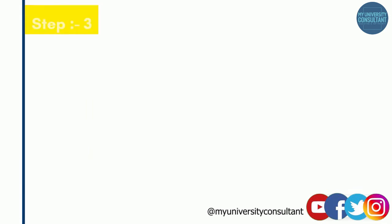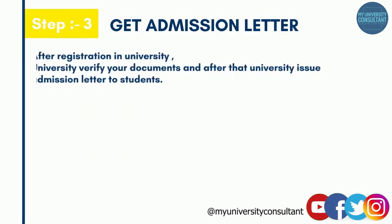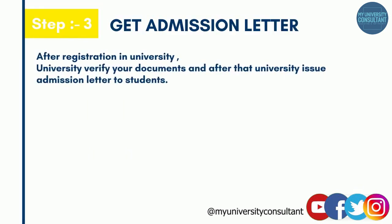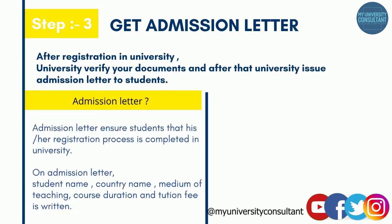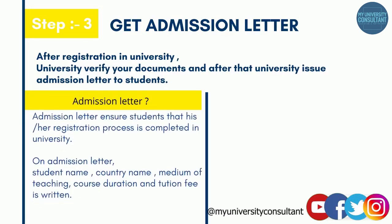In step three, you get the admission letter. After registration, the university verifies your documents and then issues an admission letter to the student. The admission letter ensures that the student's registration is completed at the university. On the admission letter, the student's name, country name, medium of teaching, course duration, and tuition fee are written.